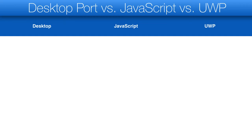UWP stands for Universal Windows Platform and it's the new approach for native Windows supported by Microsoft. These three platforms have a lot of overlap between them, and some users choose to target all three of them, however your mileage may vary — so here is a brief comparison.